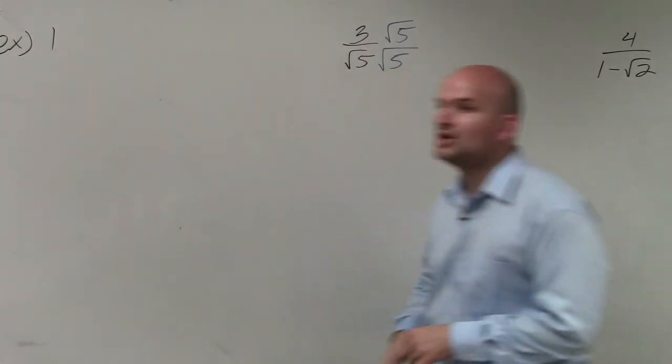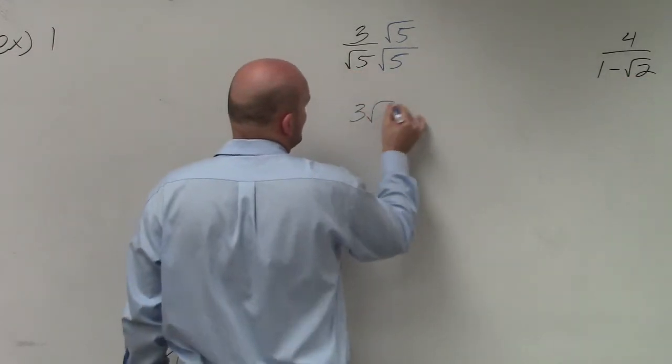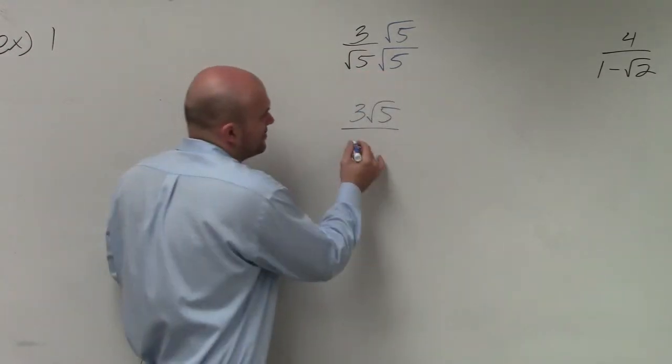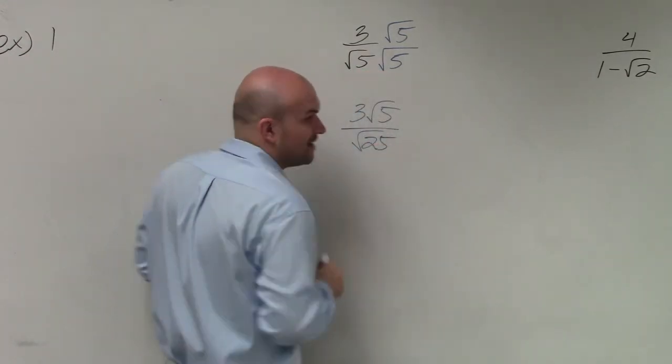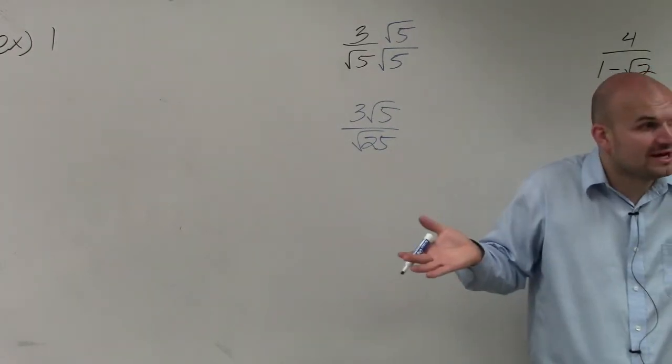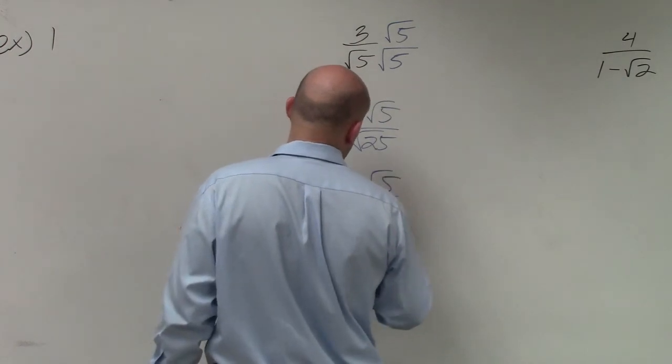So by multiplying by the square root of 5 in the top and the bottom, now what I obtain is 3 square root of 5 over the square root of, you could say 25 if you want to, 25. Now can I simplify the square root of 25? Just a 5, right? There's no more square root anymore. So now I have 3 square root of 5 over 5.